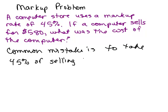A common mistake is to take 45% of the selling price. That won't work. I'll show you why in a minute. Let's see, what if they did take 45% of the selling price? So you'd have 45% of 580.